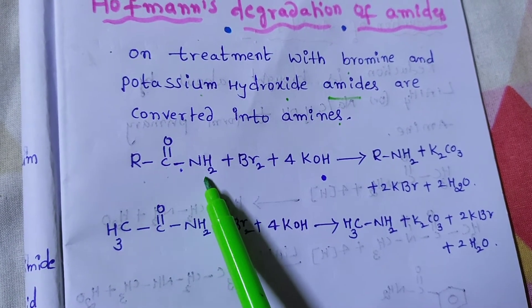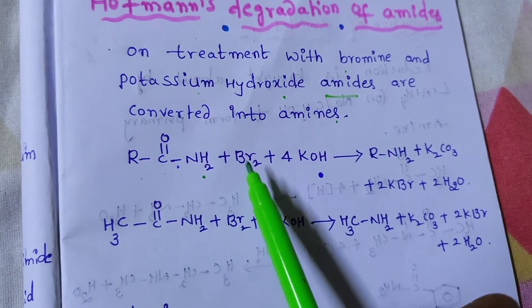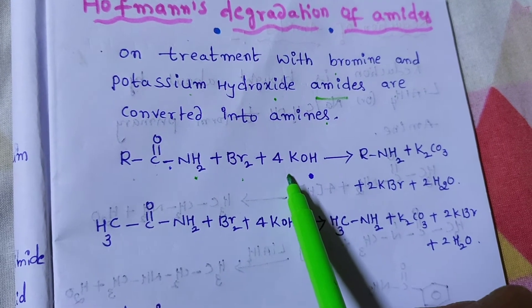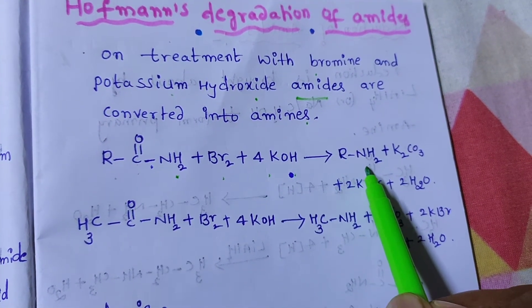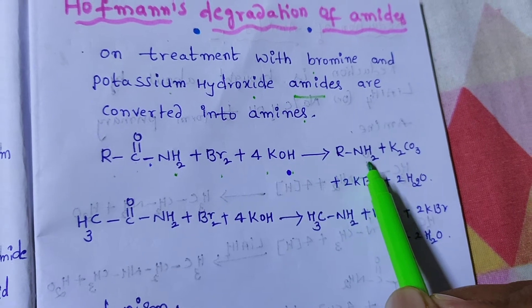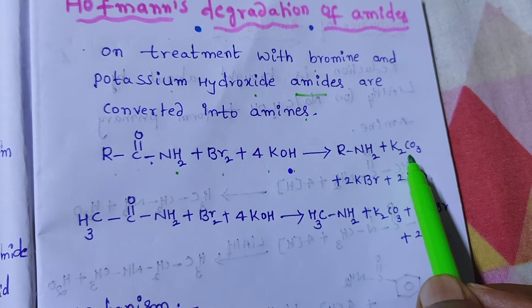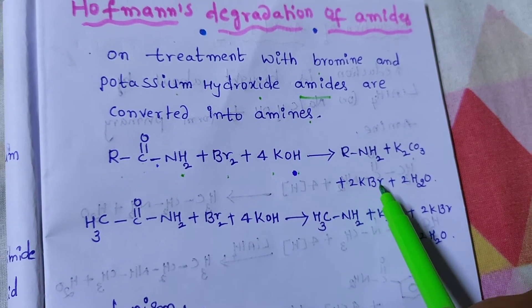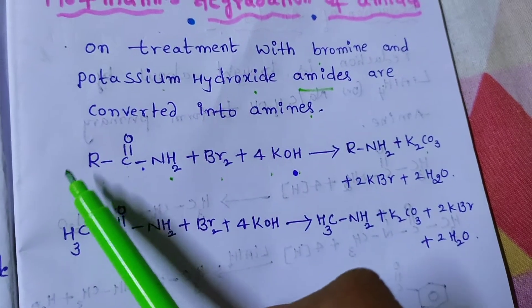R-C double bond O-NH2, this is amide. Br2 plus 4 moles of KOH. We get the primary amine, that is R-NH2 plus K2CO3, KBr plus 2H2O.